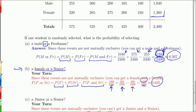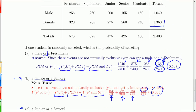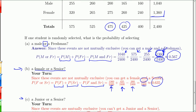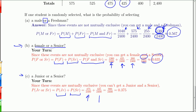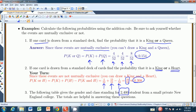For a junior or a senior, these events are mutually exclusive — you can't be both a junior and a senior — so we just add the probabilities without worrying about overlap. There are 475 juniors and 425 seniors: 475 out of 2,400 plus 425 out of 2,400 is 900 out of 2,400, which is .375. When events are mutually exclusive, you don't have to worry about counting things twice. That wraps up chapter 4.3 — see you in 4.4.